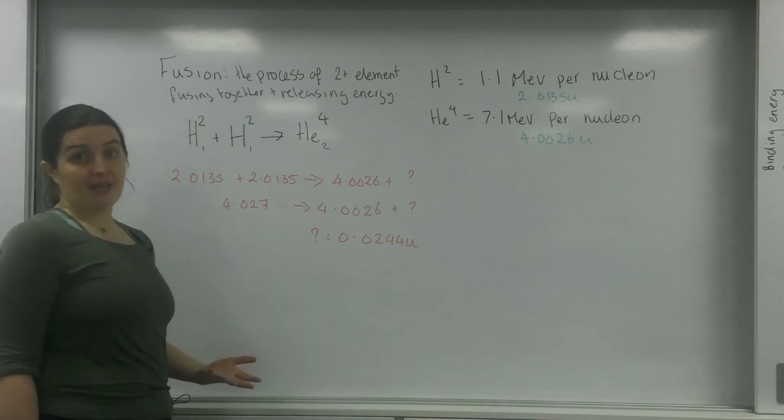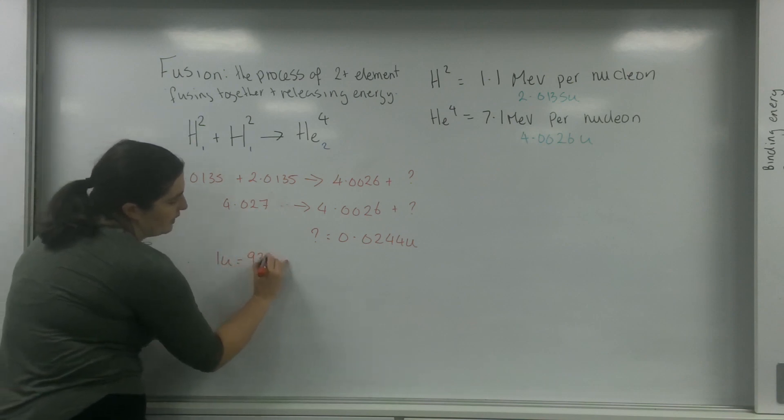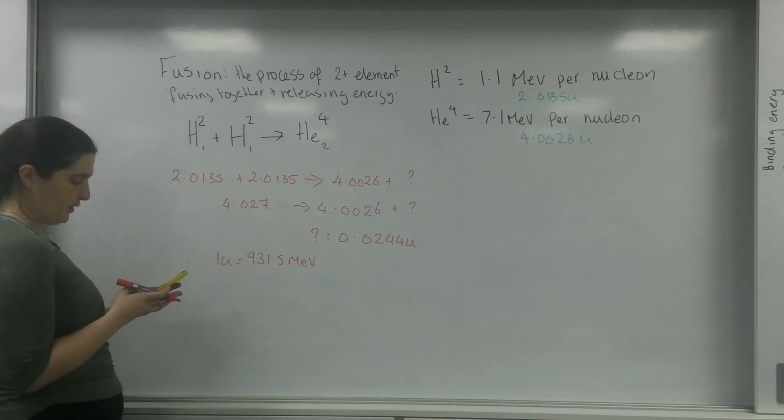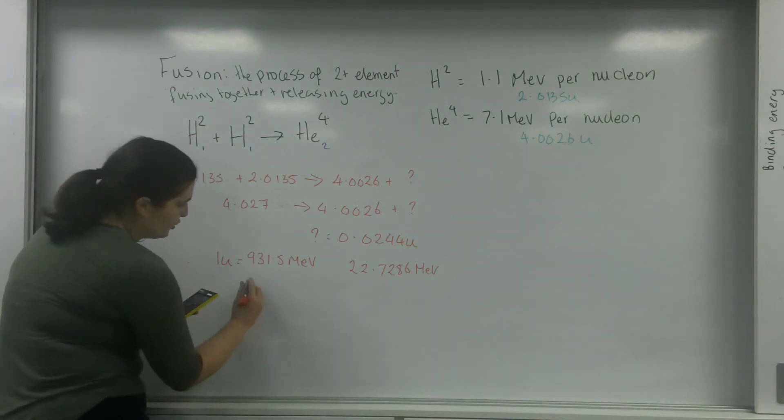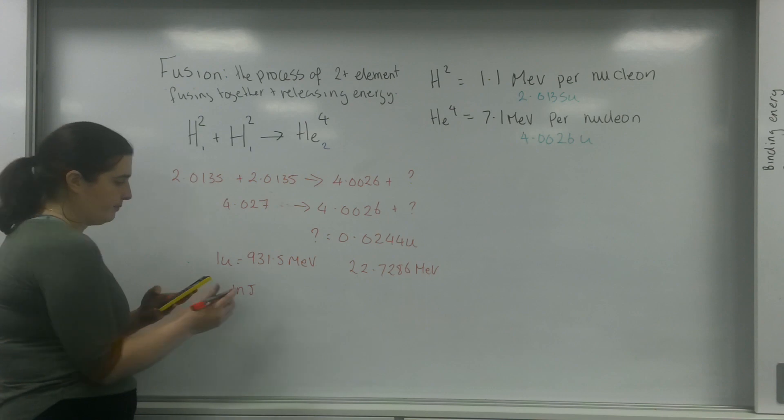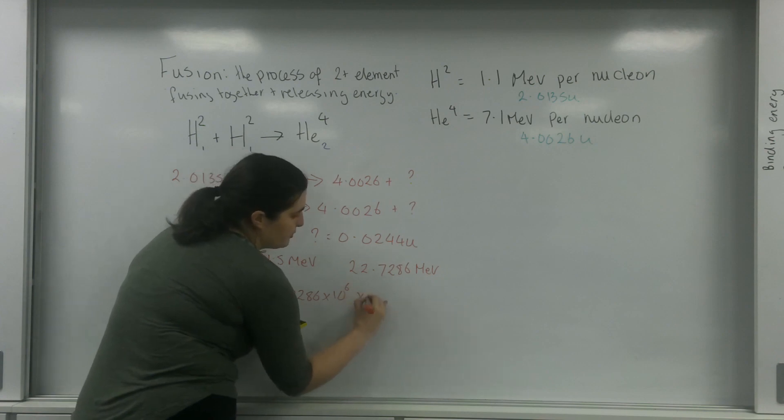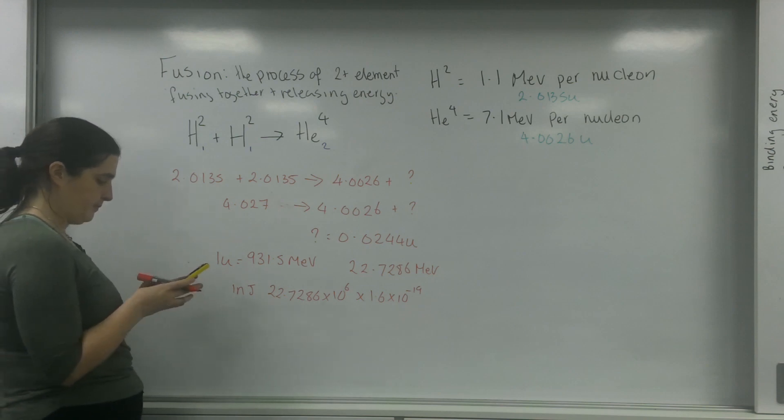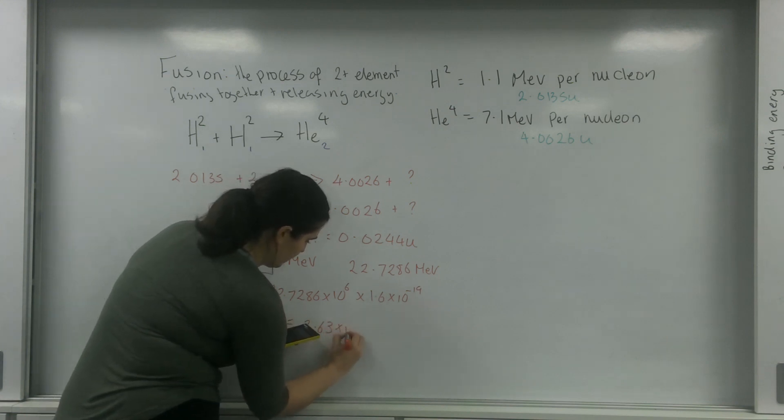I am now going to convert that into joules and I can do that numerous ways. I'm going to be using the fact that 1U is 931.5 MeV. So the amount of energy I have is 931.5. I have got 22.7286 MeV being released, which means in joules I have got 22.7286 times 10 to the 6, times by 1.6 times 10 to the minus 19.